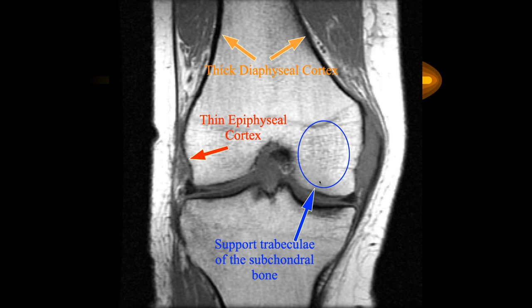If you have a trabecular injury near the subchondral bone, that trabecular bone can no longer handle the transmitted force. This increases the risk of an impacted fracture — either acutely or chronically if you continue to weight bear. Subchondral bone injuries are very important; if they're close to the subchondral plate, that area has to be protected until the trabecular bone heals.